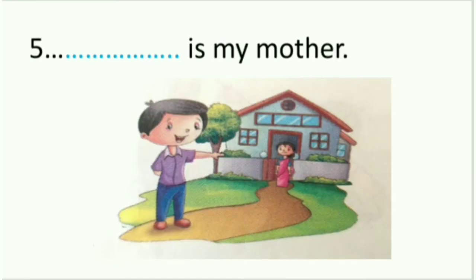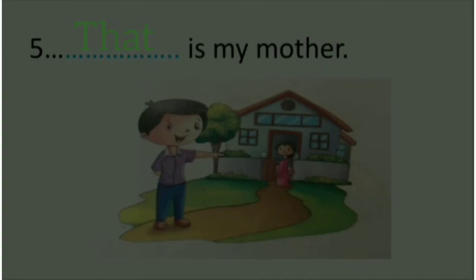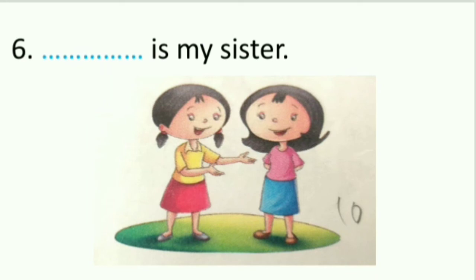The fifth one: dash is my mother. The boy is standing outside the house and the mother is inside — the boy is very far from the mother — so for a person who is far away we write T-H-A-T, 'that'. The sixth one: dash is my sister. The two girls are standing together and the sister is very nearby, so we write T-H-I-S, 'this'.